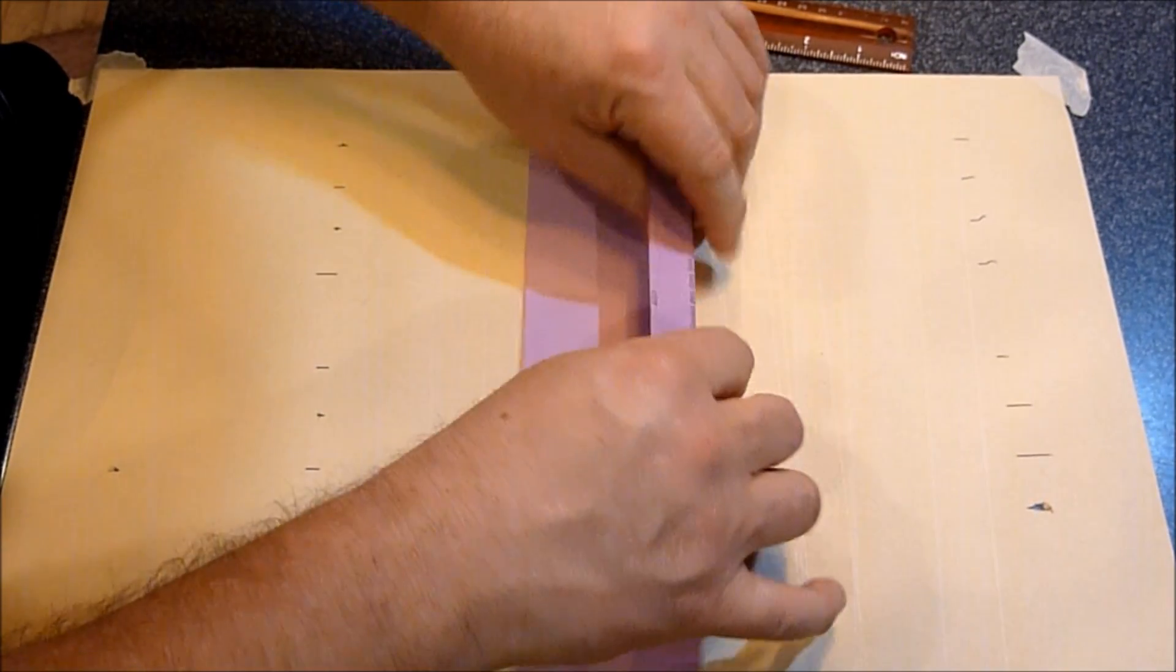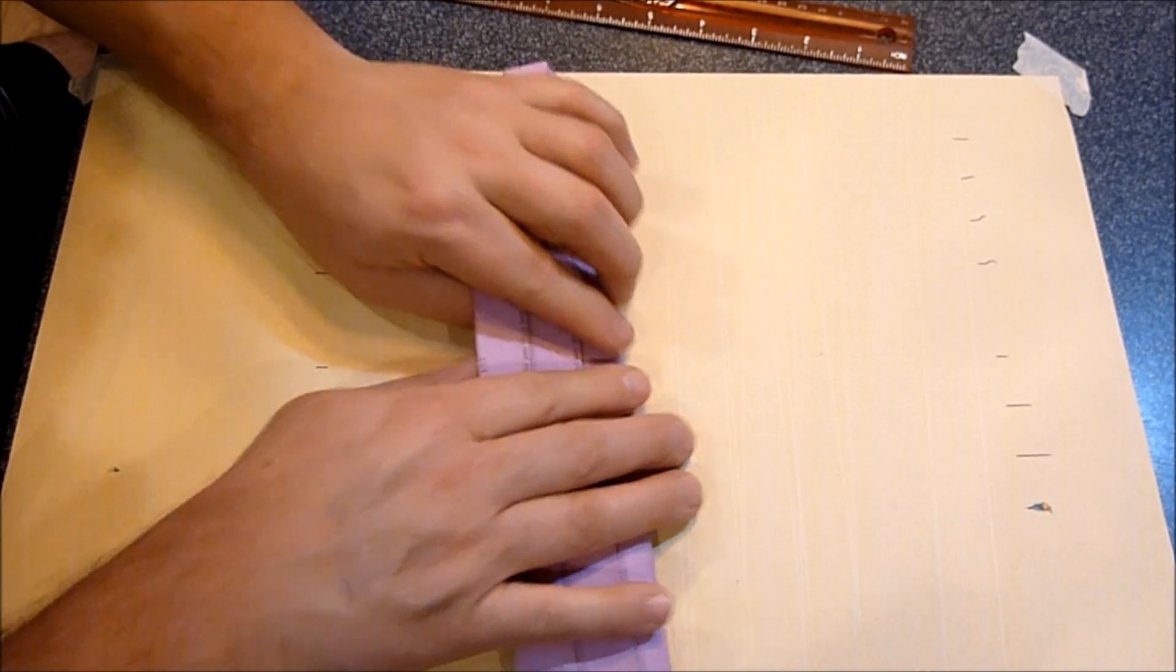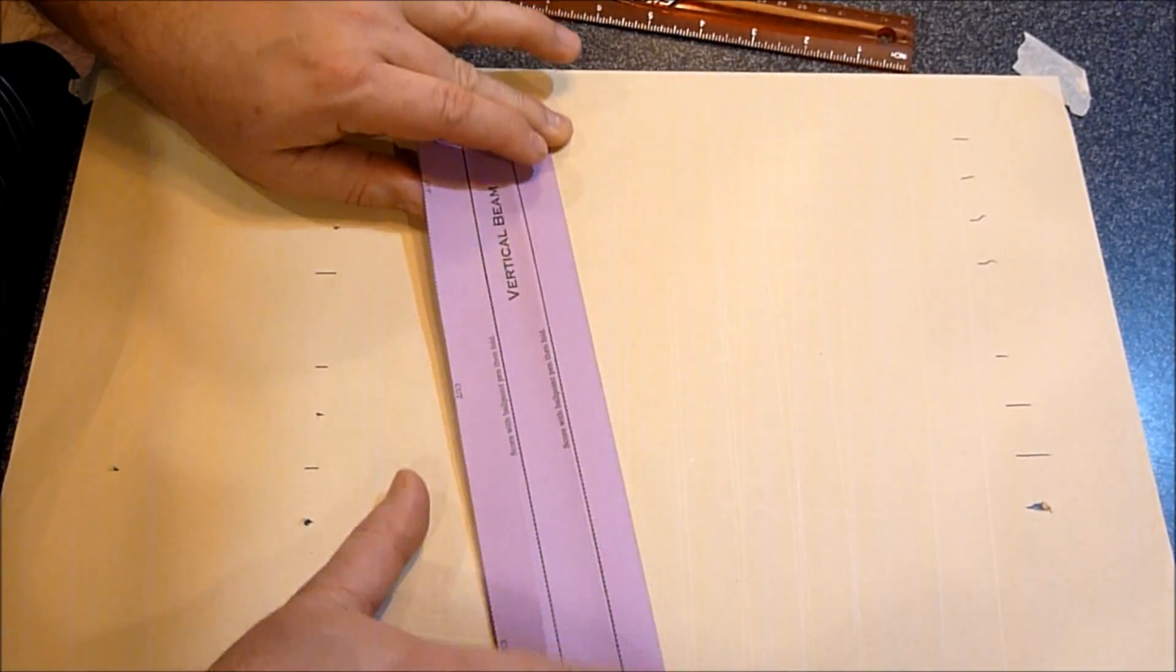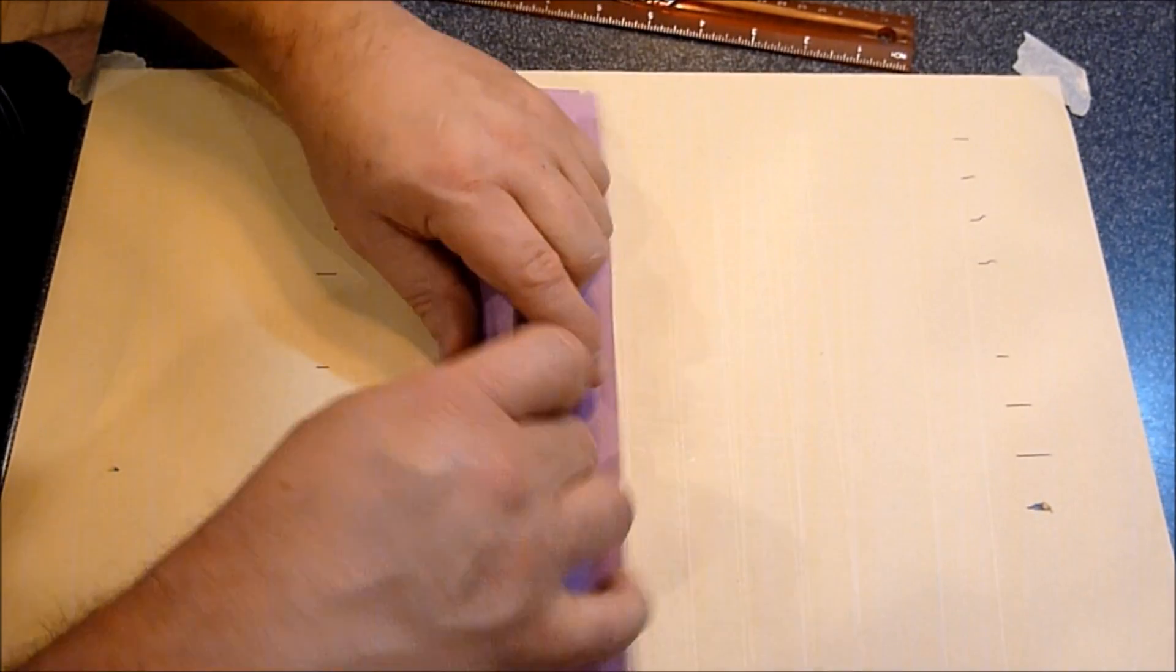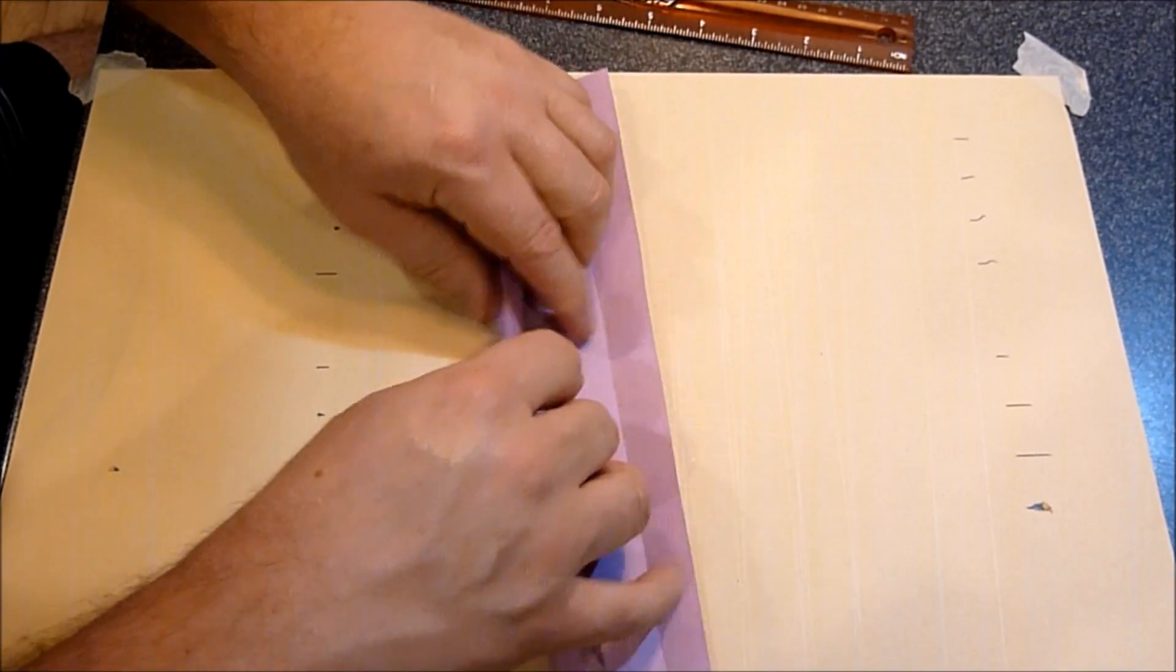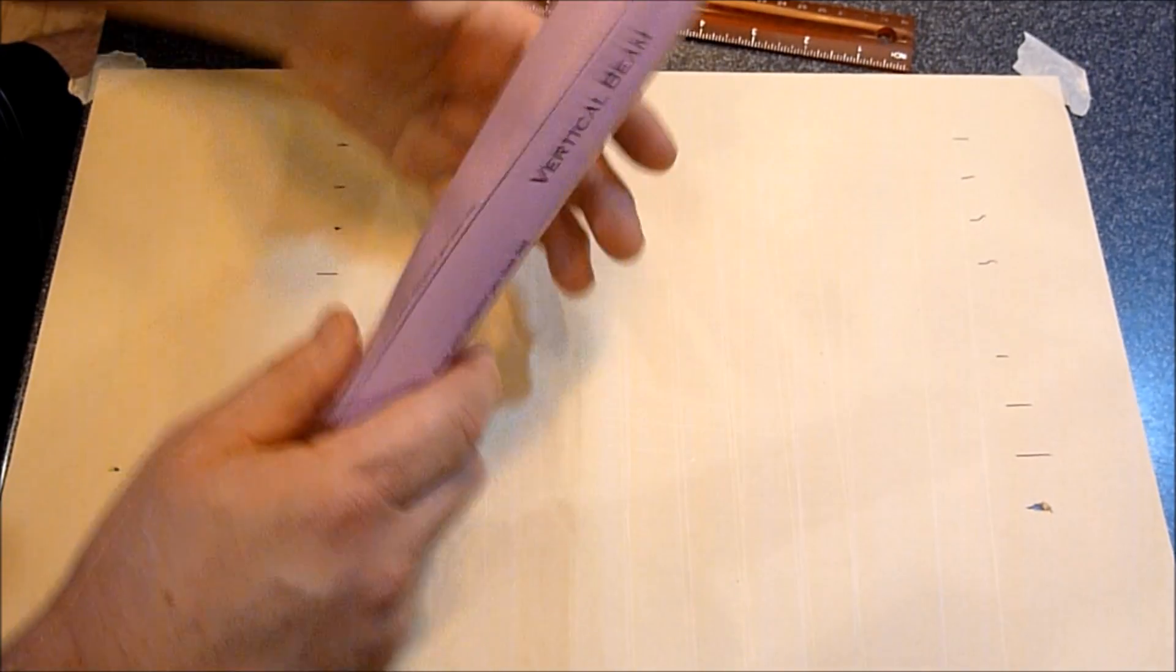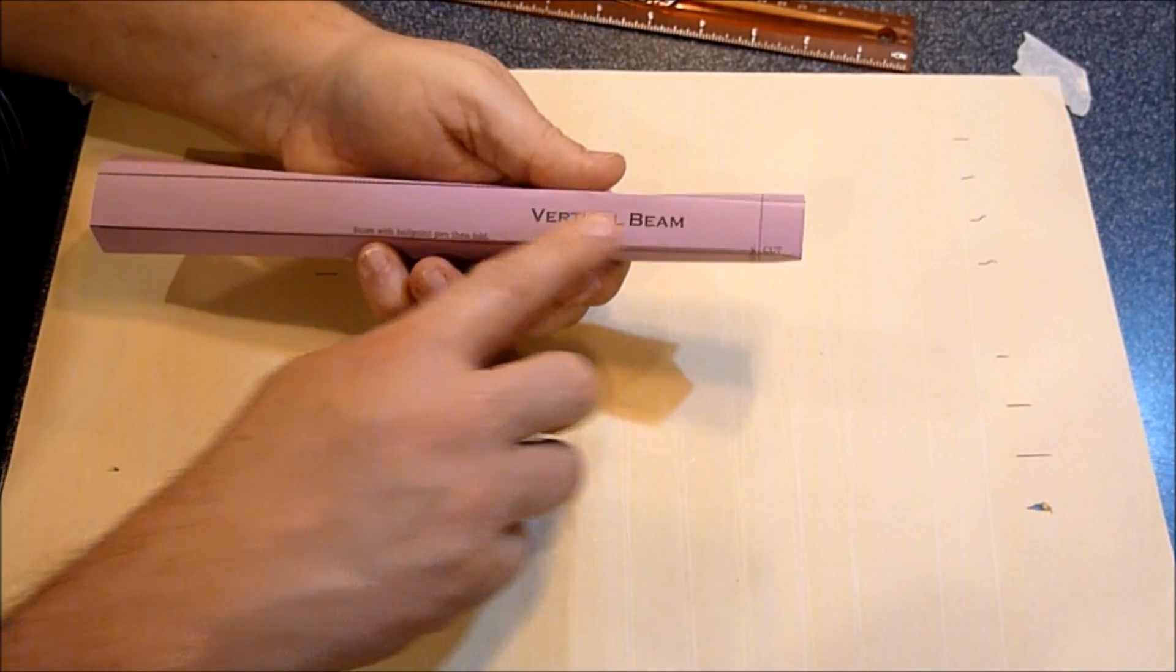All you do is fold it over like this, fold it backwards with the print out. What it will do is create a beam for you that has the writing on the outside so that you know which beam is which.